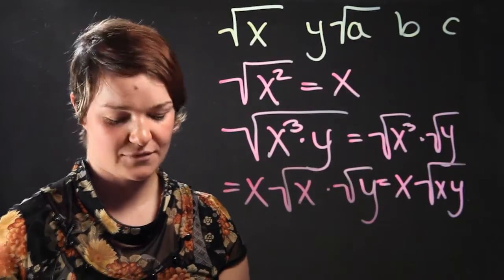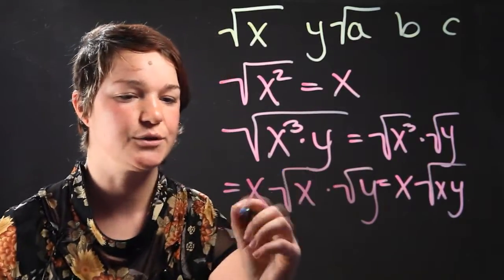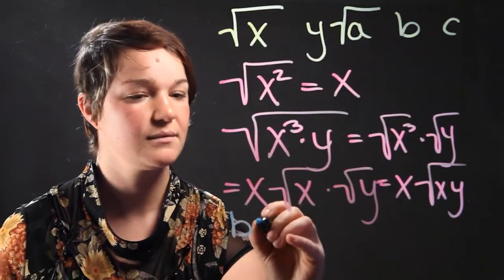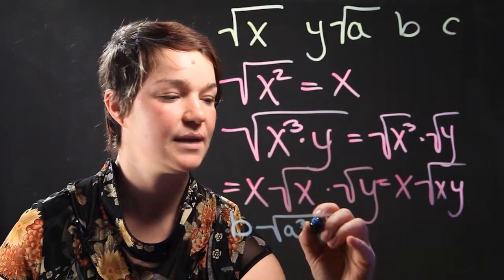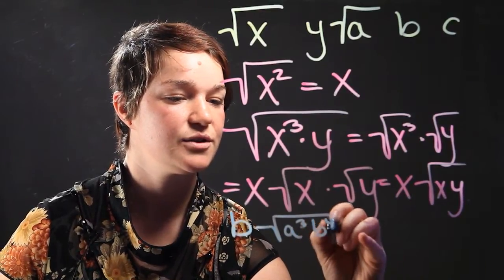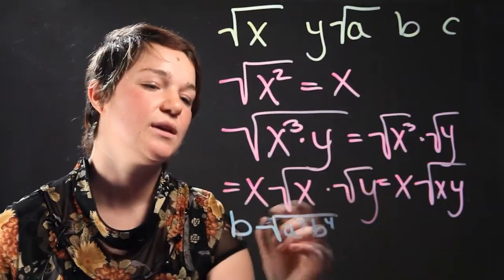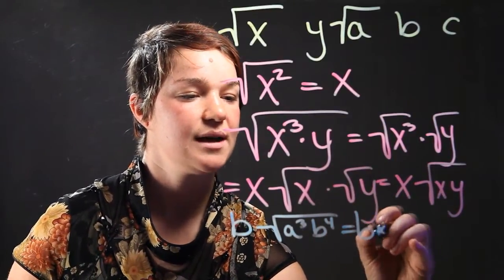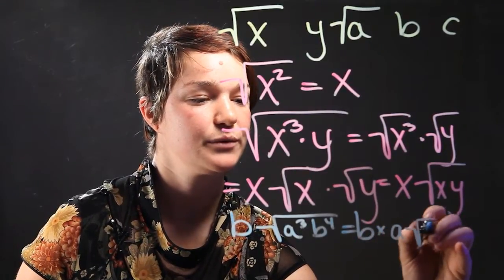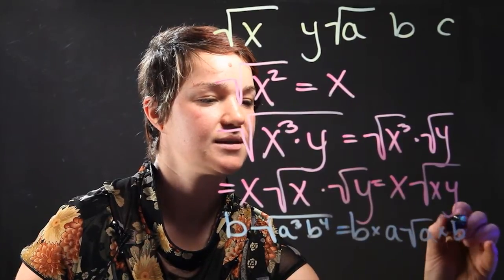Okay, let's do a really hard one. We'll do b times the square root of a cubed times b to the fourth power. So how would you simplify this? This expression is the same as saying b times a square root of a times b squared. Or even simpler,